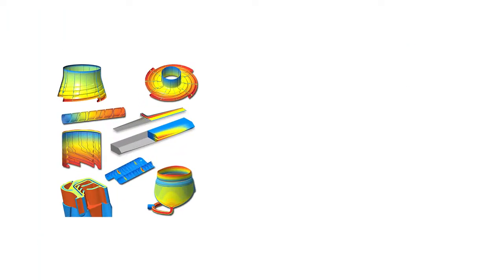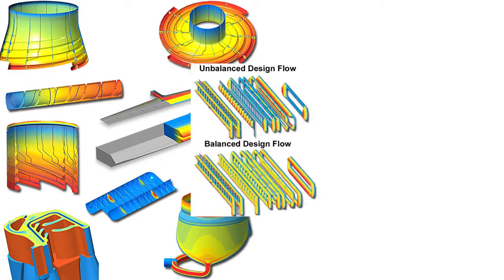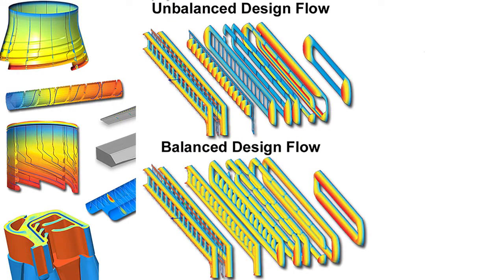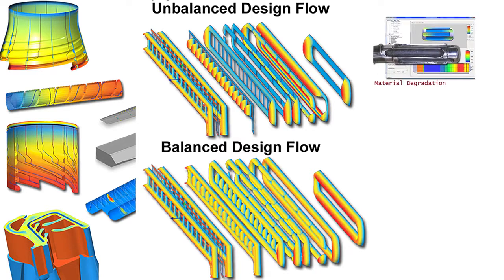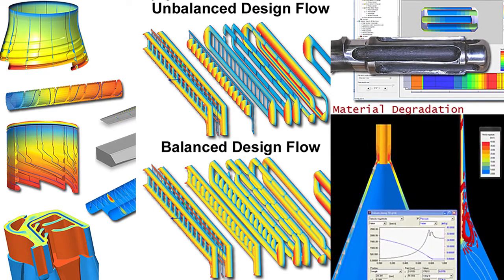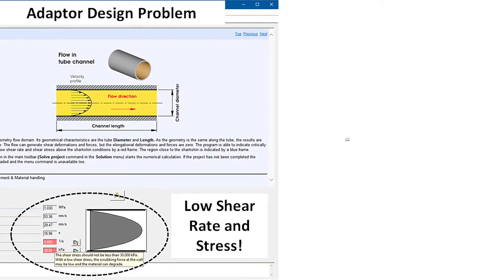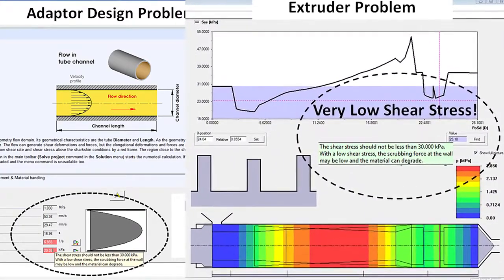The CompuPlast Virtual Extrusion Laboratory software allows you to predict and manipulate your designs digitally so you can test performance and optimize the design before cutting steel. Automatic design checking uses established parameters to alert users to potential design problems and inefficiencies.